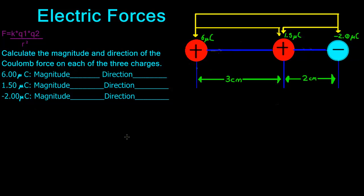Hi guys, today we're talking about electric forces. In this problem it says calculate the magnitude and direction of the Coulomb force on each of the three charges. So this is the equation we're going to be using to find the electric force: F = K times Q1 times Q2 divided by R squared, where K is Coulomb's constant.